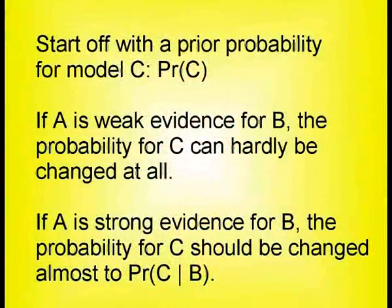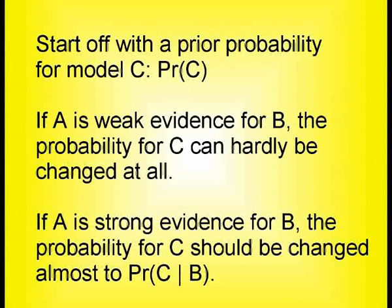You don't know that B is true; you only know that you've received data that is pointing towards B. If the data pointed very weakly to B, then you've hardly learned anything at all, and so you would hardly update your probability for C either. If the evidence for B is strong, you would expect that you get almost the same as if you knew that B was true.